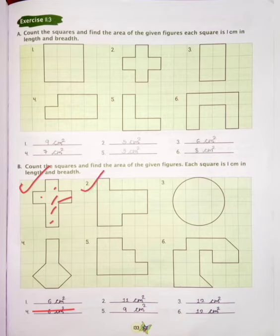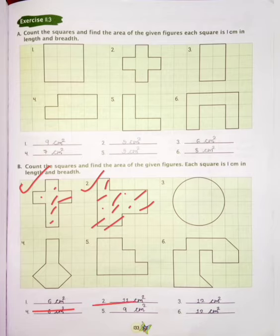Now number 2 — counting 1, 2, 3, 4, 5, 6, 7, 8, 9, 10, 11. So the next answer is 11 square centimetres.